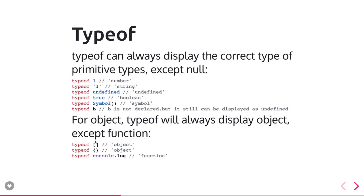Null is always represented as an object. typeof undefined is undefined, typeof true is boolean, typeof symbol is symbol, typeof number is number, typeof string is string, typeof array is object, typeof object is object, console.log is a function.